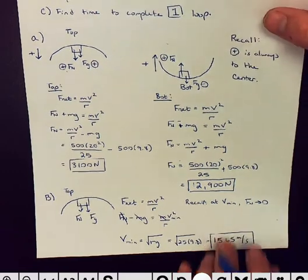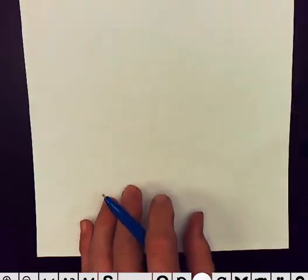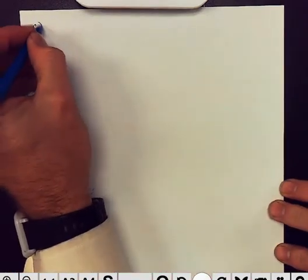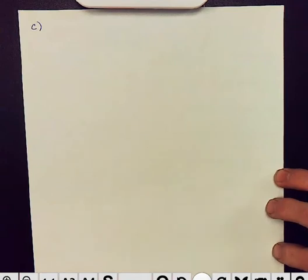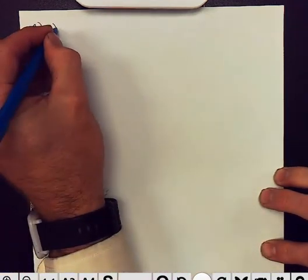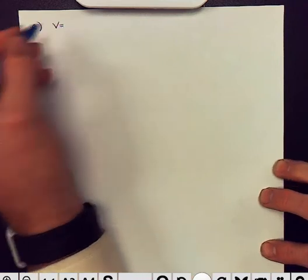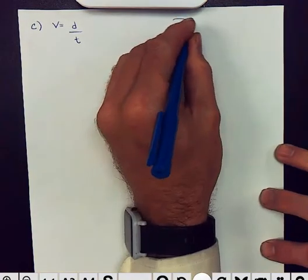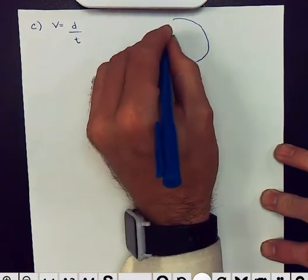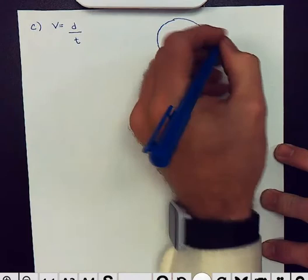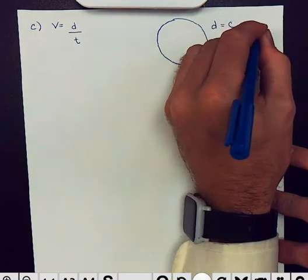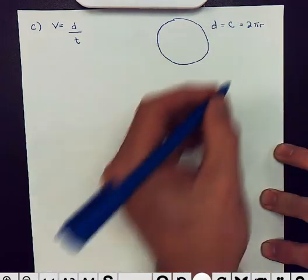Now, for part C, we are asked total time to complete one loop. Guys, if we go back to our basic definition, speed is equal to distance divided by time. If we have an object moving in a circle, distance is equal to the circumference, which is equal to 2 pi times the radius.